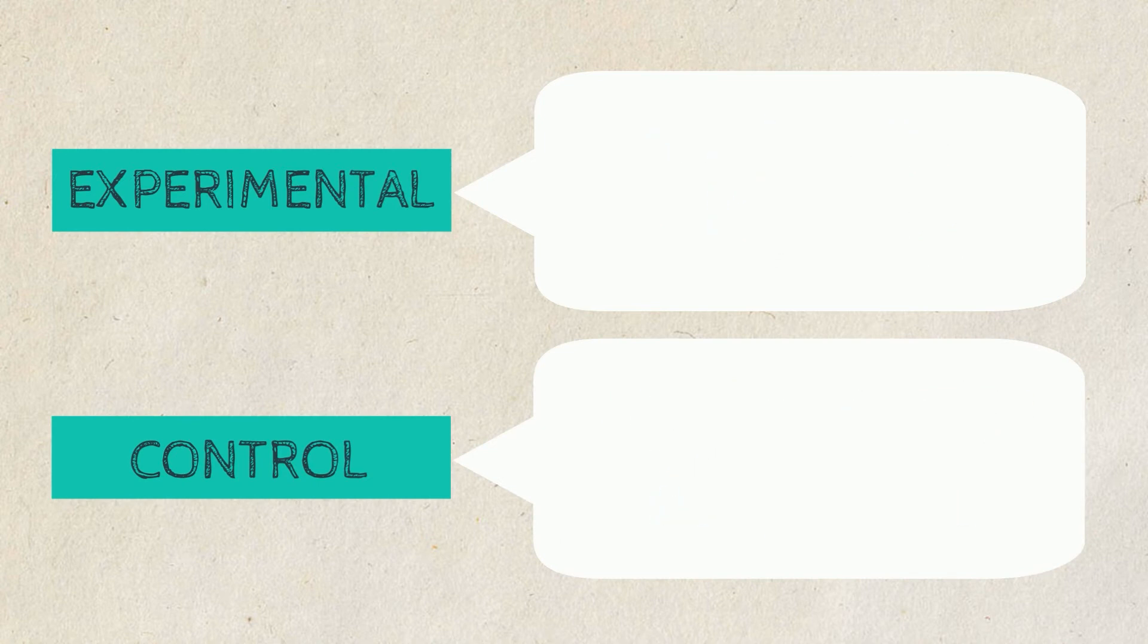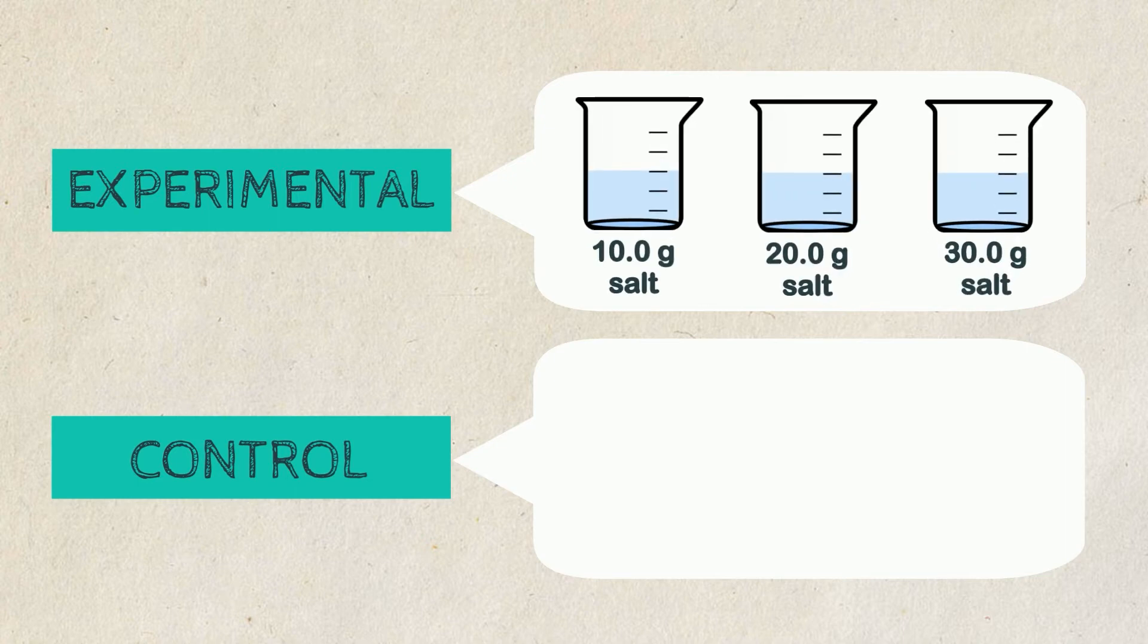Using this example, the experimental group is a set that receives different amounts of salt, while the control group is a set that does not receive any salt at all. Most of the time, this is the set that remains under natural or normal conditions.